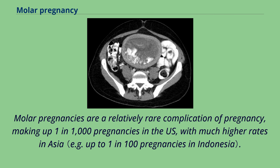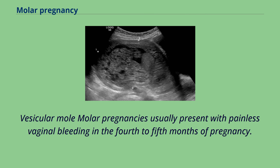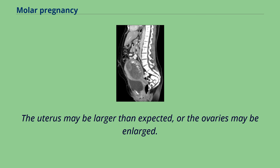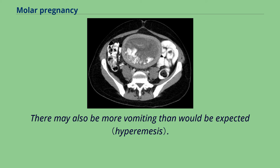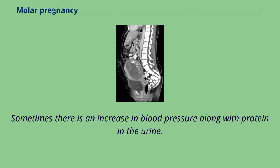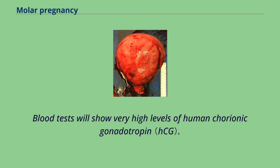Molar pregnancies are a relatively rare complication of pregnancy, making up 1 in 1,000 pregnancies in the US, with much higher rates in Asia. Molar pregnancies usually present with painless vaginal bleeding in the 4th to 5th months of pregnancy. The uterus may be larger than expected, or the ovaries may be enlarged. There may also be more vomiting than would be expected. Sometimes there is an increase in blood pressure along with protein in the urine. Blood tests will show very high levels of human chorionic gonadotropin.